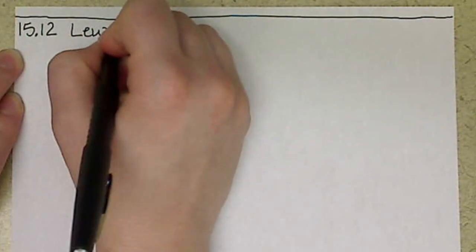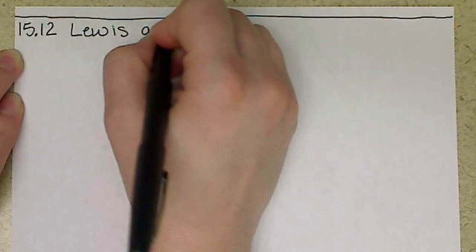Our last section for chapter 15 to cover gives us a different definition of acids and bases, and that is our Lewis acids and bases.